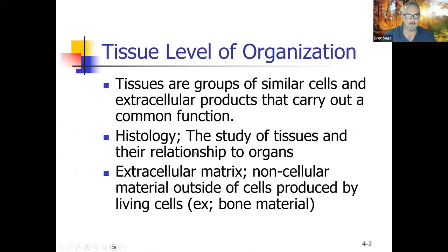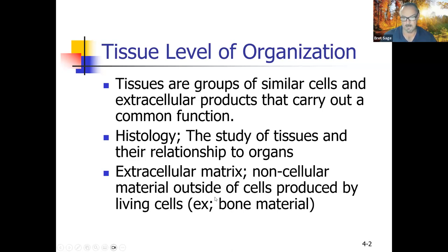Tissues are groups of similar cells and extracellular products that carry out a common function. Extracellular products refer to things like the non-cellular part of bone and cartilage. Histology is the study of tissues and their relationship to organs. The extracellular matrix is the non-cellular material outside cells, produced by living cells — for example, what we call bone is the matrix portion of bone tissue.